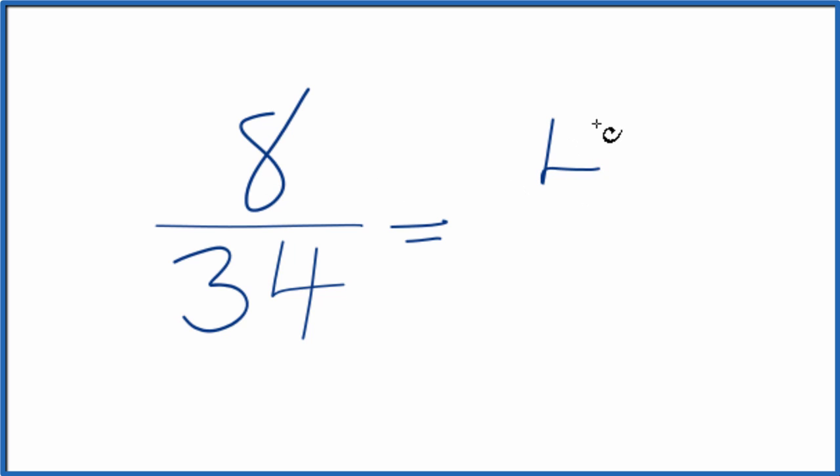8 divided by 2, that's 4. 34 divided by 2 is 17. So we used our common factor here of 2. And when we do that we end up with 4 over 17, and we can't reduce this any further.